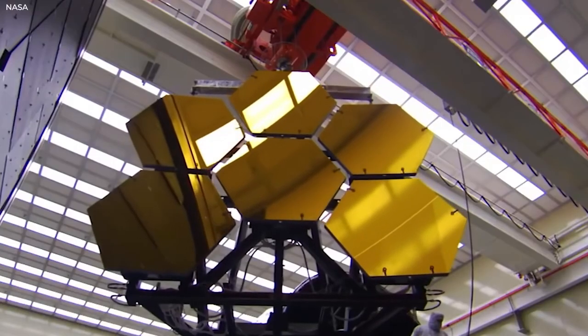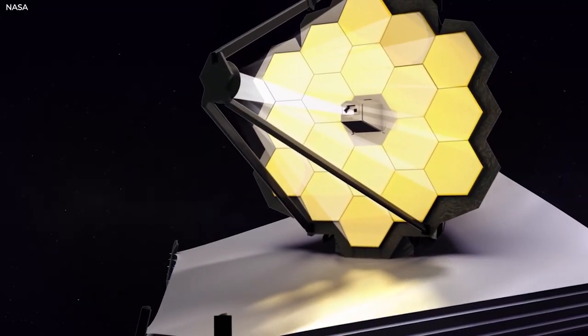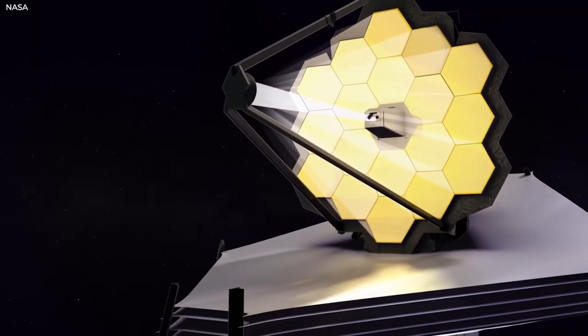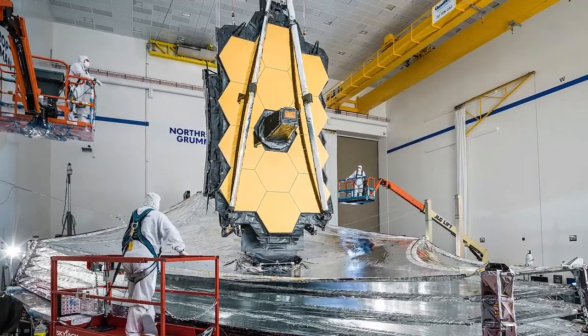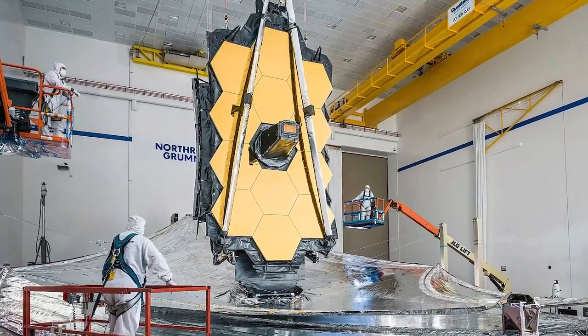Commissioning entails making a series of observations to put each instrument through its paces, including testing all of the detectors with every possible filter and pupil-wheel combination. It entails imaging, spectroscopy, coronagraphy, and ensuring that everything functions as planned.